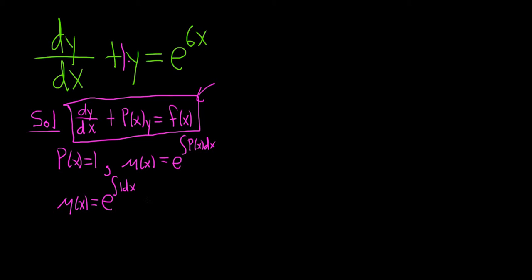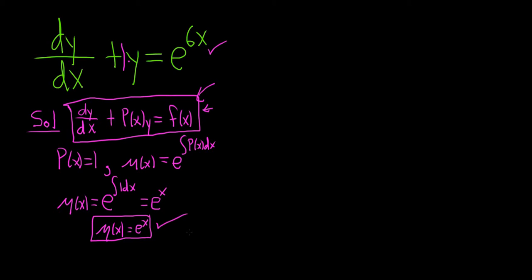So μ(x) equals e to the integral of 1 dx. When you integrate 1 you just get x, and we don't have to worry about the constant of integration. So μ(x) equals e to the x — I'm going to put this in a box because this is an accomplishment.